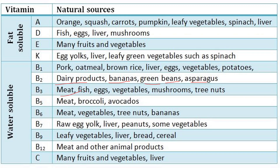Vitamin B7 sources: raw egg yolk, liver, and peanuts. Vitamin B9 sources: leafy vegetables, liver, bread, cereal, meat, and other animal products. Vitamin C sources: FVL — fruits, vegetables, and liver. Reading once may not help you memorize everything, but just before the exam, refer to these so you can have a general idea and eliminate wrong options in multiple choice questions.